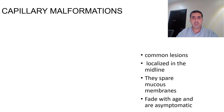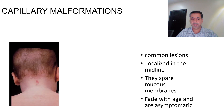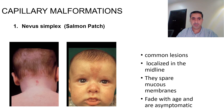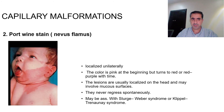Starting with capillary malformations: nevus simplex — these are common lesions localized in the midline, sparing mucous membranes. They fade with age and are asymptomatic. This is also known as the salmon patch.